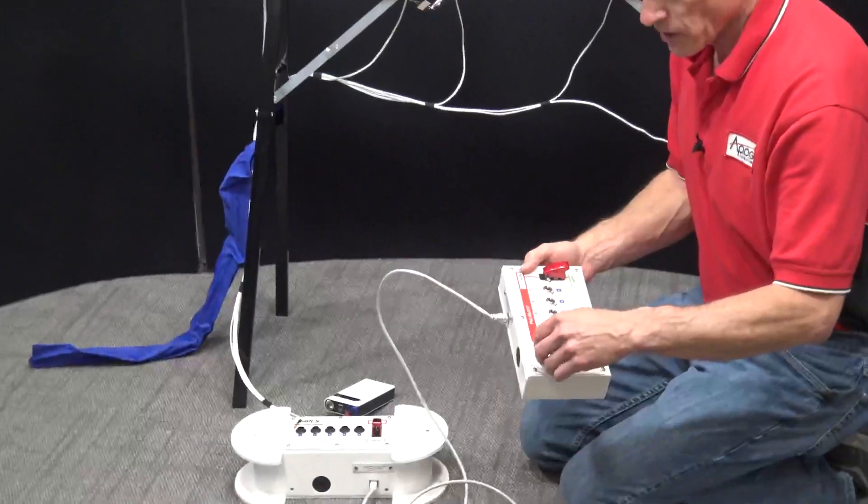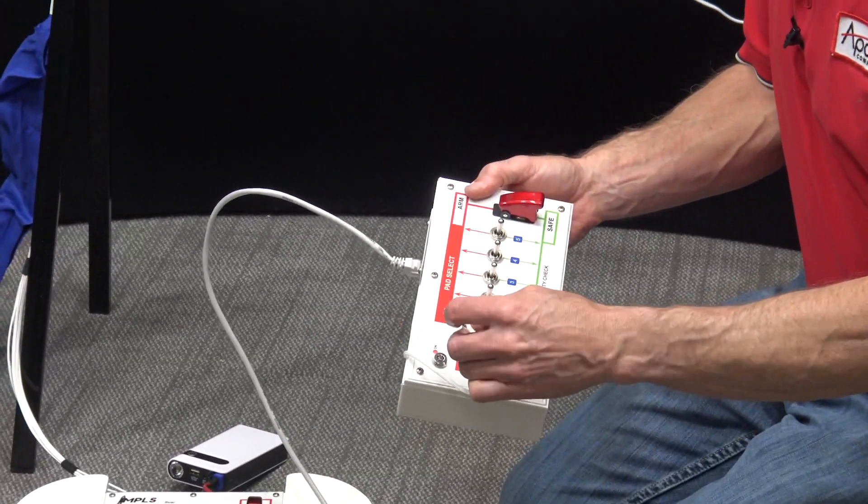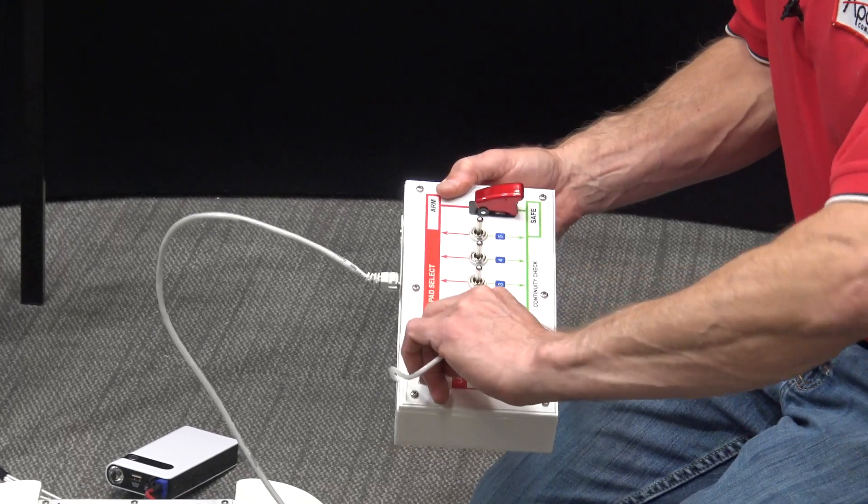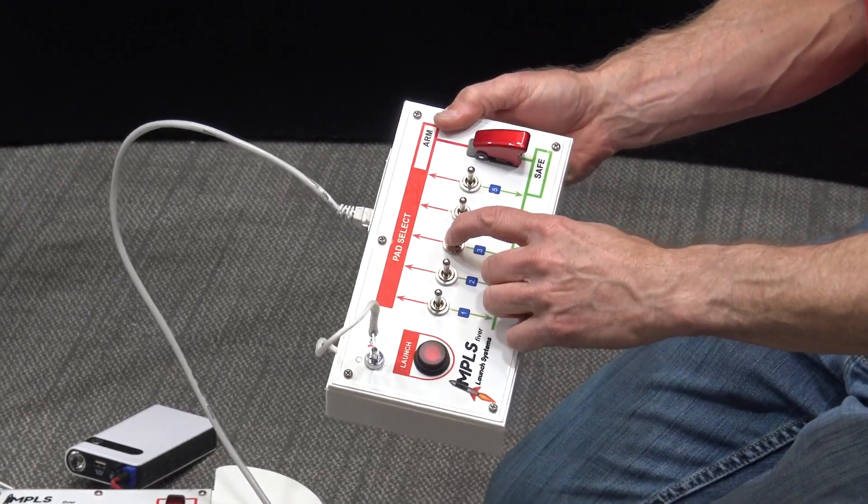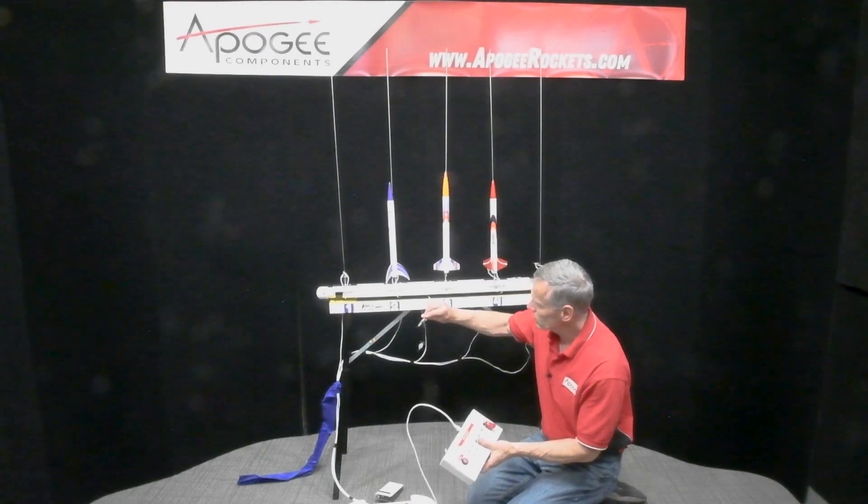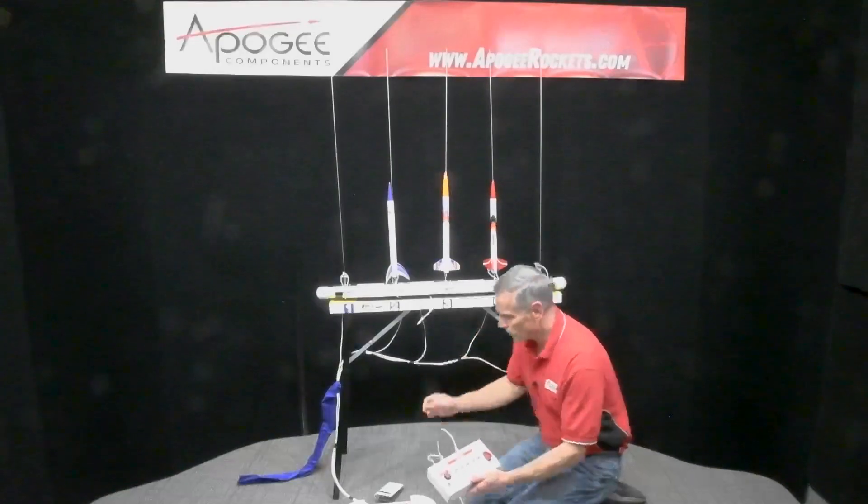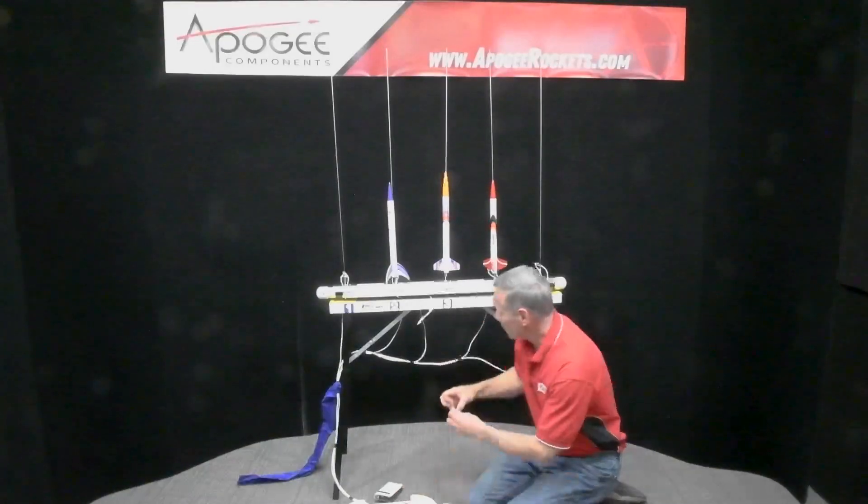And then from here, I can also check continuity. First, I need to put the key in. So it's got a safety key. Get it in there the right way. Turn that on, and this was pad three, and I can just check it right here. And if I disconnect it again over here, I push down on it, and I can tell there's no continuity. Let me put this back on.